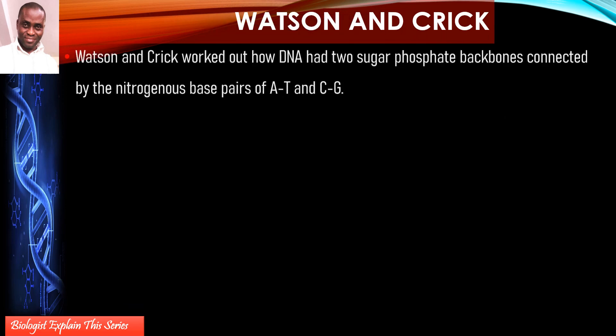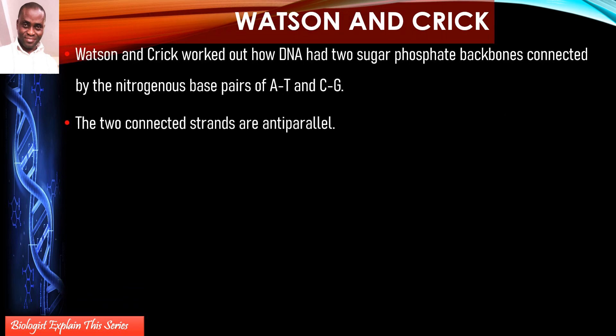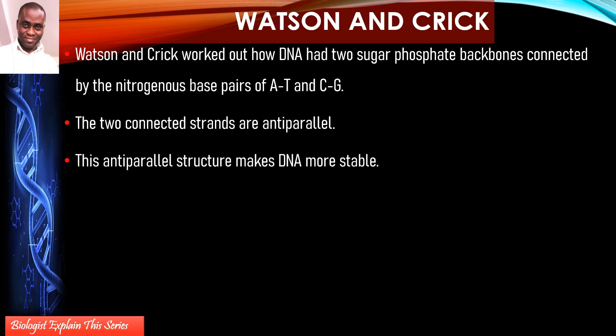Watson and Crick worked out that DNA consists of a sugar-phosphate backbone — that is the strand of DNA. Picture DNA like a ladder: the pillars of the ladder are the sugar-phosphate molecules that form the chain, and the rungs of the ladder are represented by the bases that are bonded together.